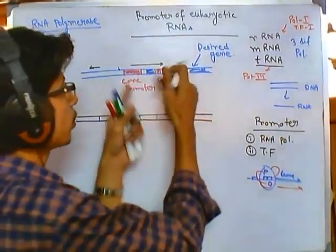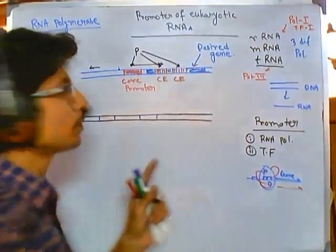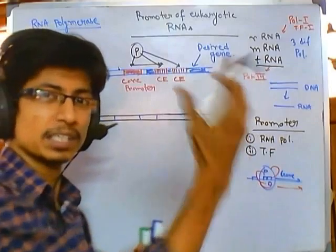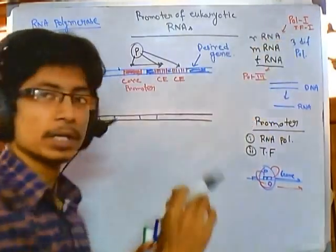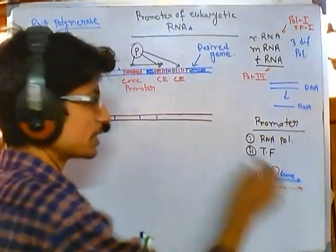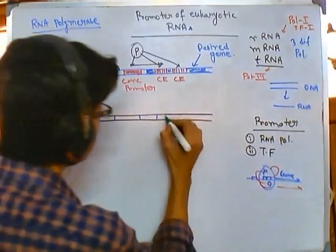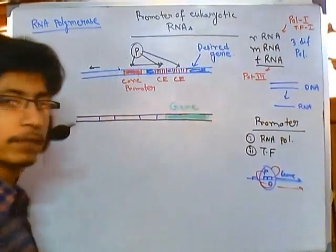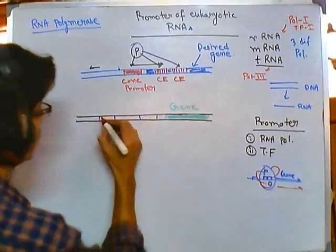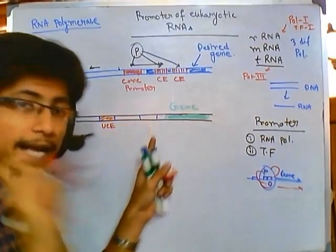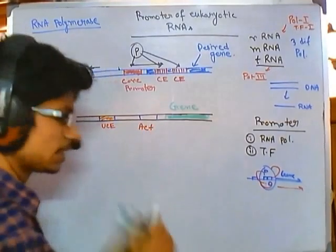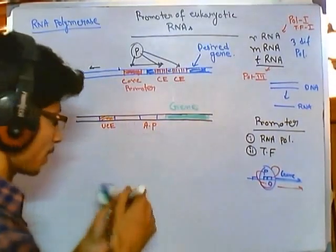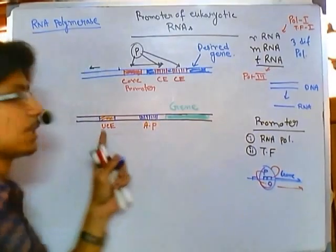In the case of the tRNA promoter, the promoter element is embedded inside the desired gene, or can be present downstream of the desired gene. But in the case of rRNA and mRNA promoters, the promoter placement resembles the prokaryotic type — upstream of the desired gene. The rRNA promoter has two different sections: one is called the upstream control element or UCE, and the other is called the actual promoter or AP.